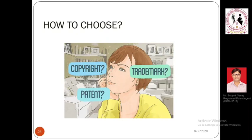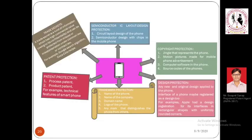A basic question that comes to mind, especially for those new to IPR, is: how to choose which type of IPR is eligible for my subject matter or creation? Let's take the example of a mobile phone — everyone in this session uses one. This phone may have so many types of IPR applicable to it. For trade secret, it can be any specific type of code or operating system installed in this machine that the company does not want competitors to know.